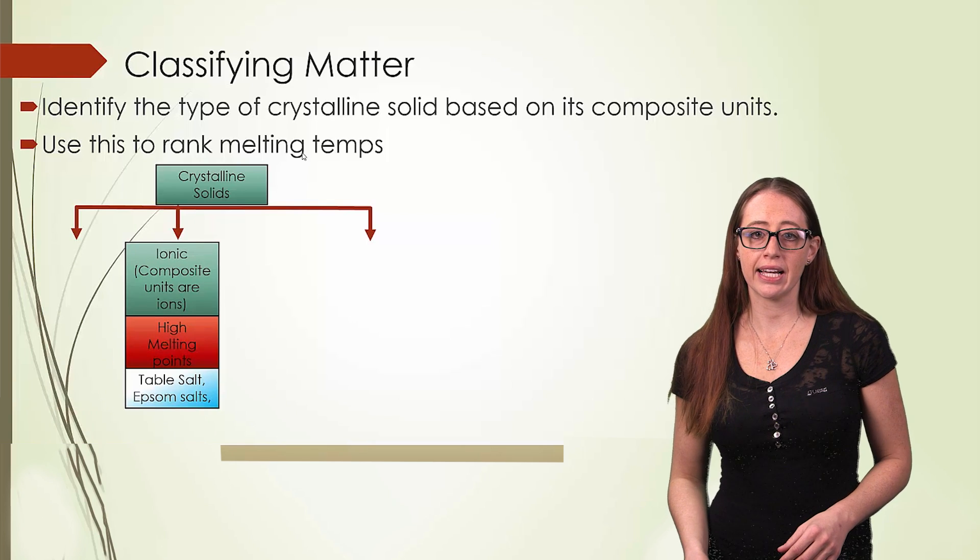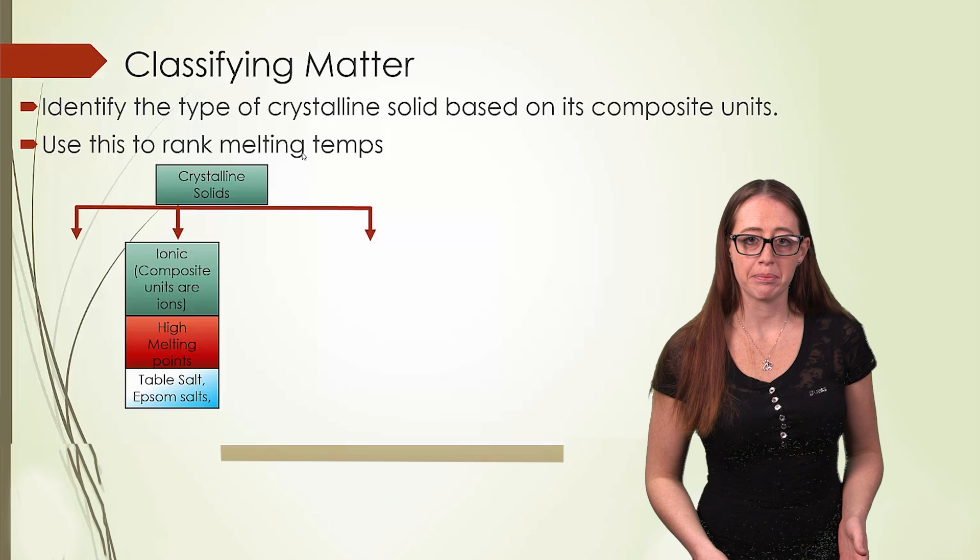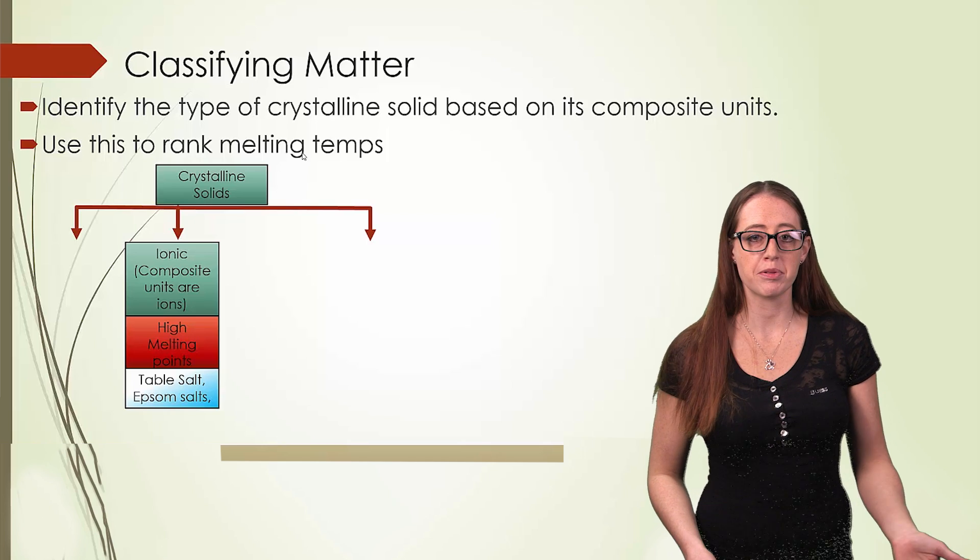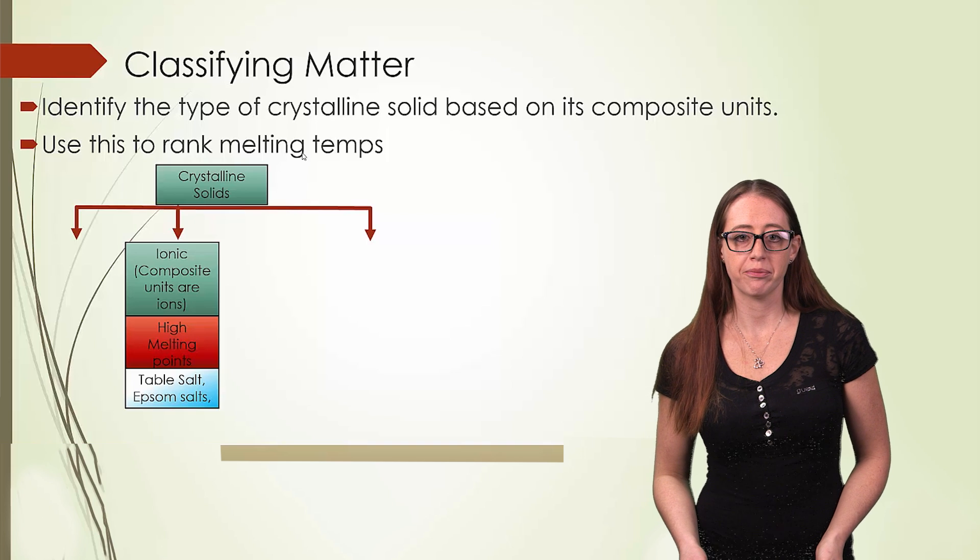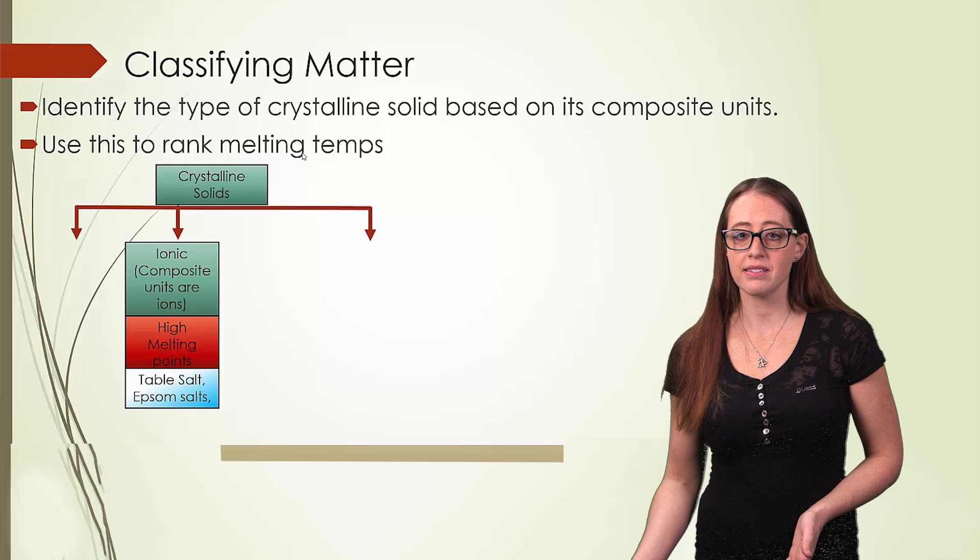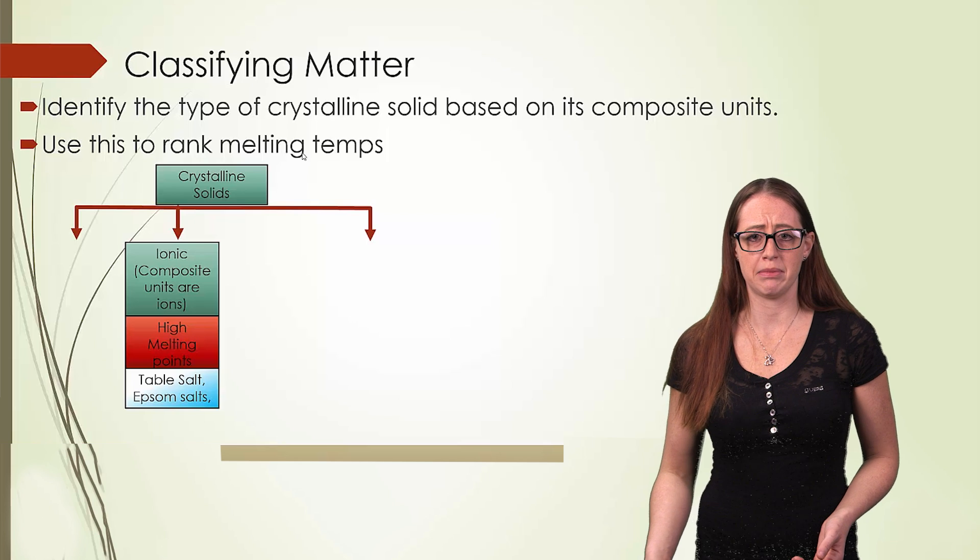Now we'll look at ionic bonding. These are made up of cations and anions. Things like table salts or Epsom salts fall into this category. Since melting these require breaking ionic bonds, they tend to have very high melting temperatures.